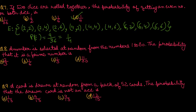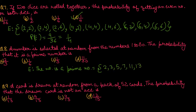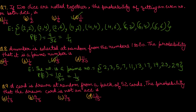Question number 8: A number is selected at random from the numbers 1 to 30. The probability that it is a prime number. Total cases are 30. The prime numbers from 1 to 30 are: 2, 3, 5, 7, 11, 13, 17, 19, 23, 29 — that gives 10 favorable cases. So probability is 10 upon 30, which simplifies to 1 upon 3. Option number C is the correct option.